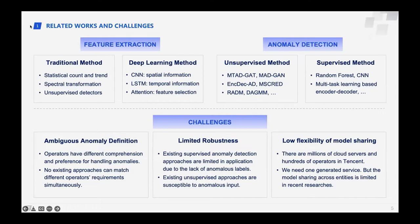Based on the extracted features, previous studies use random forest or encoder-decoder models to detect anomalies. Previous unsupervised anomaly detection methods forecast or reconstruct multivariate time series and detect anomalies by prediction error or reconstruction error.